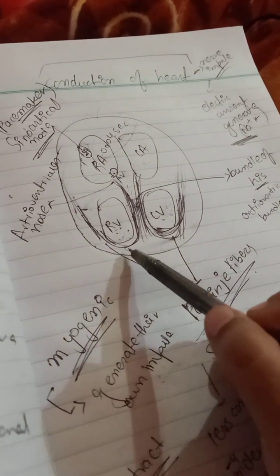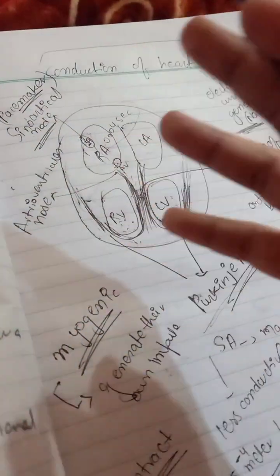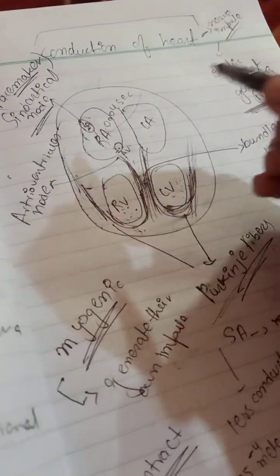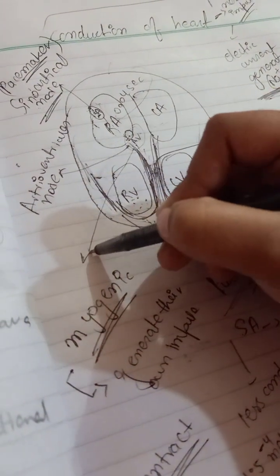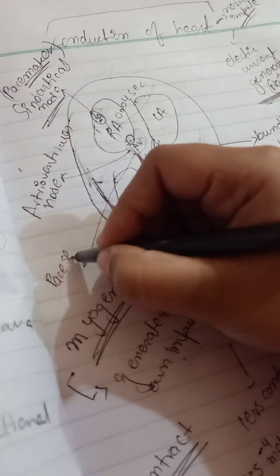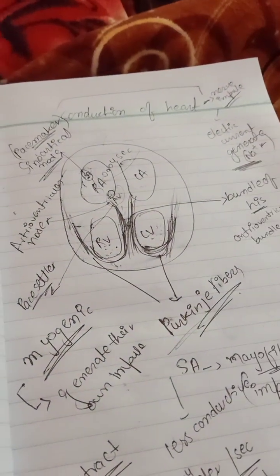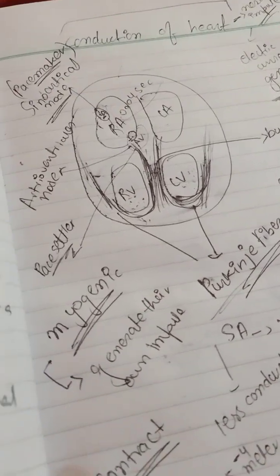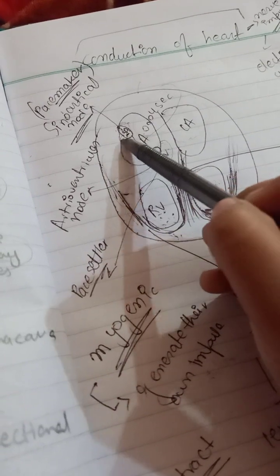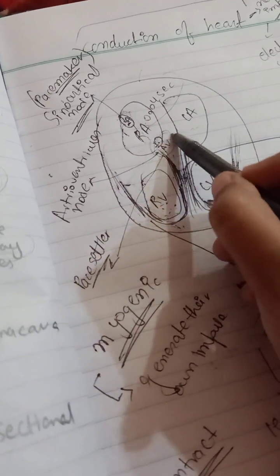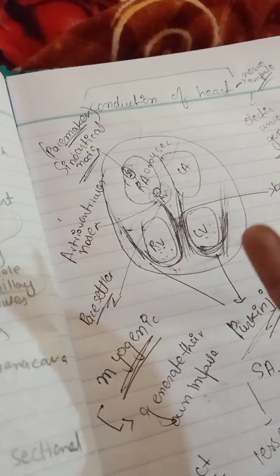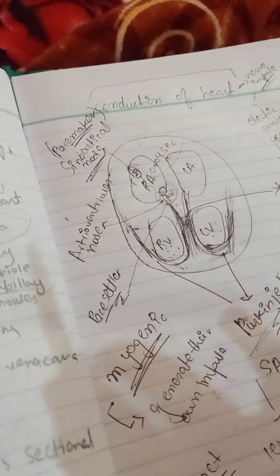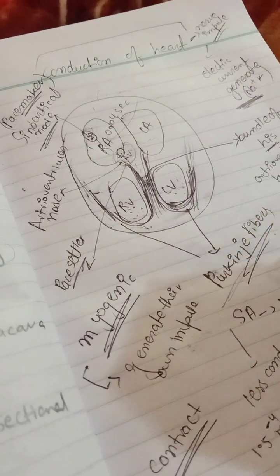The Purkinje fibers are present in the ventricular walls and give the impulse throughout the heart. This was about the conduction of the heart, composed of four components. The AV node is basically a pace settler, where conductivity is more - unlike the pacemaker SA node where conductivity is less. In the next video we will discuss the ECG.